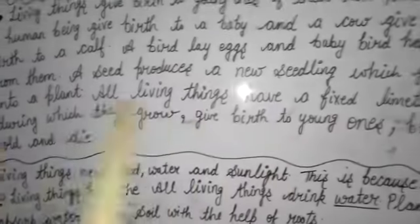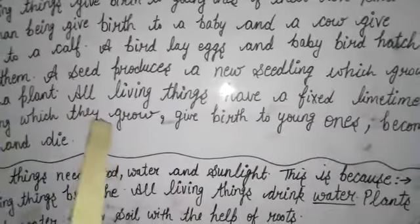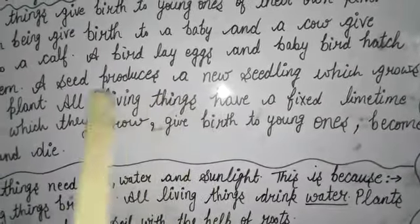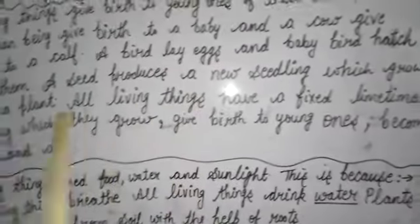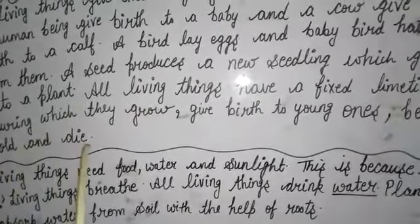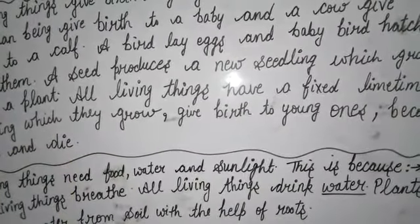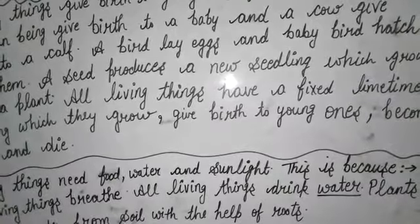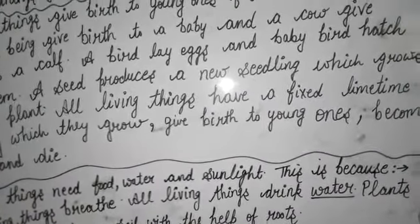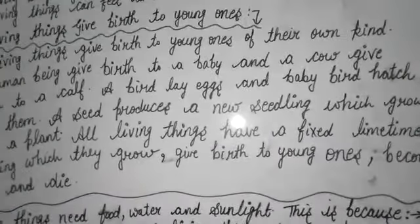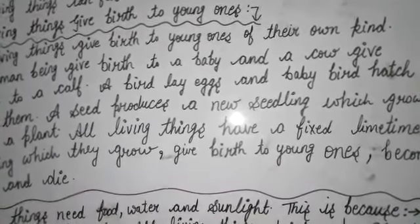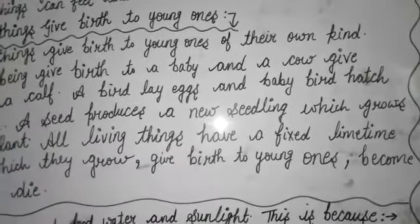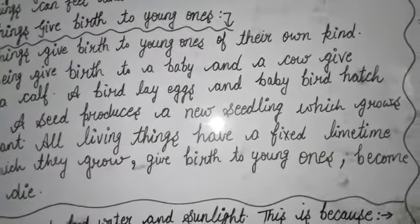All living things have a fixed timeline during which they grow. सभी living things का एक time होता है जिस period में वो grow करते हैं, baby को जन्म देते हैं, बूढ़े होते हैं और उनके बाद उनकी death हो जाती है. तो living things की एक नई feature यह है कि living things give birth to young ones. अब हमारी features of living things complete हो गई हैं, और अब हम पढ़ेंगे non-living things के बारे में.